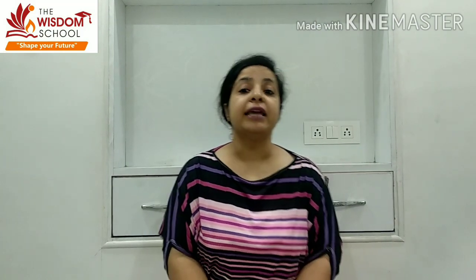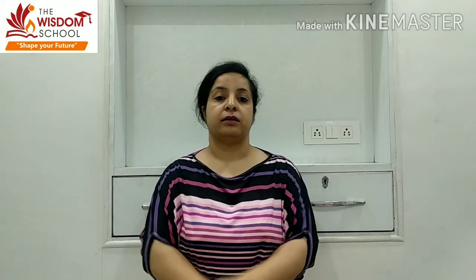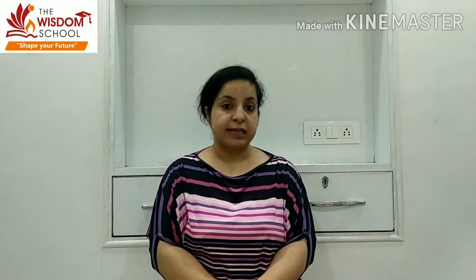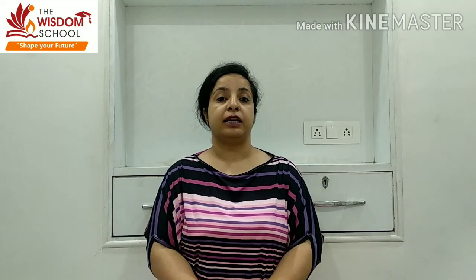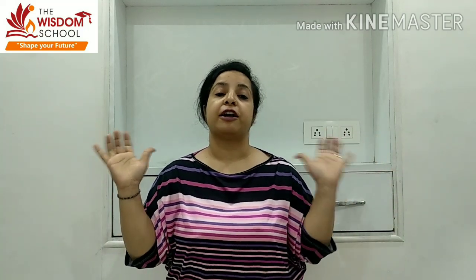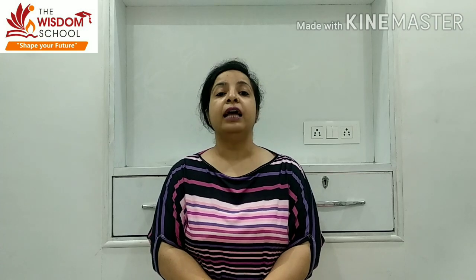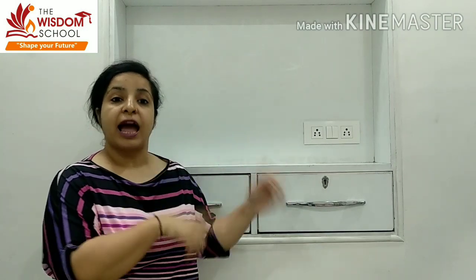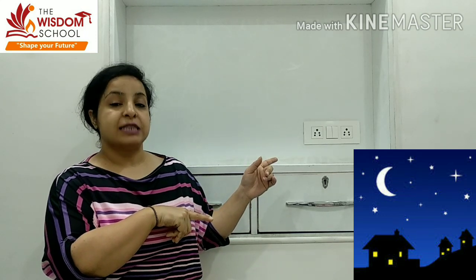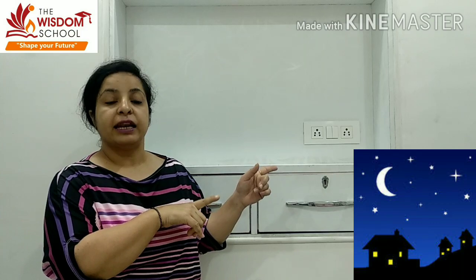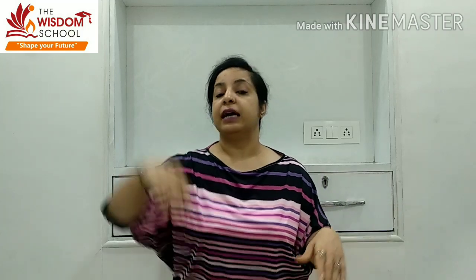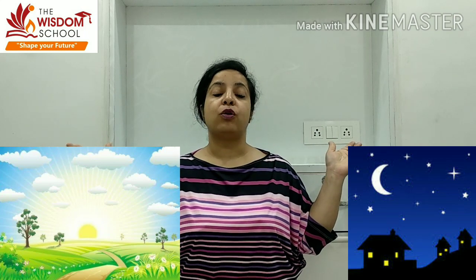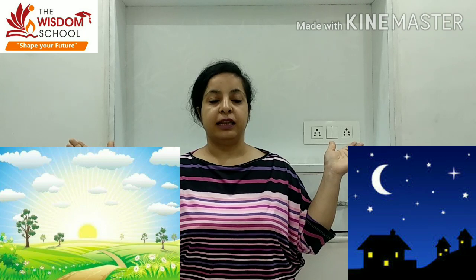Next word is night. Night means raat. Hum log kya karte hain jab night ho jaati hai? Hum log sleep karte hain. Aur hume kya dikhahi deta hai sky mein? Moon dikhahi deta hai, stars dikhahi dete hain. Aur sab taraf dark — andhera ho jaata hai. Now look at the picture of night. Dekho, is picture mein stars aur moon dikh rahe hain, aur andhera hai — it means night hai. Now look at both pictures: day and night. Day mein kya dikh raha hai, night mein kya dikh raha hai — difference dekho. Very good.